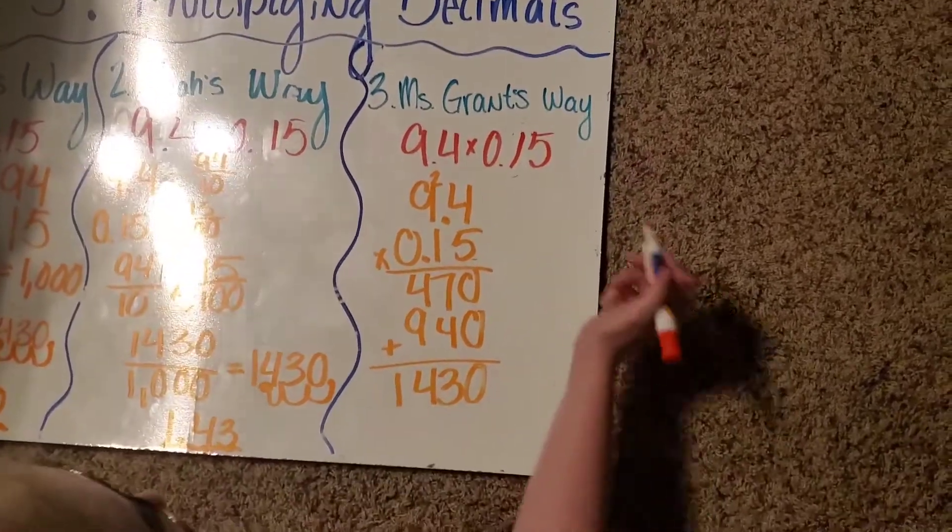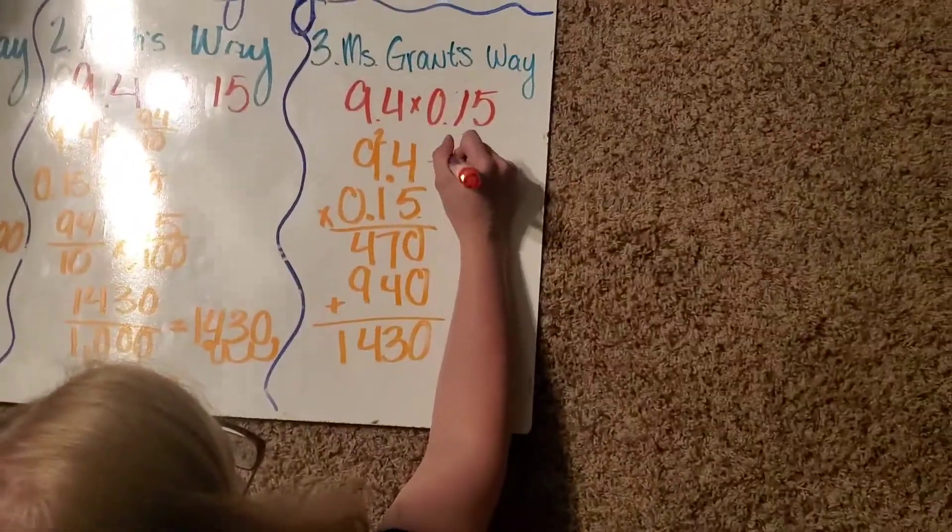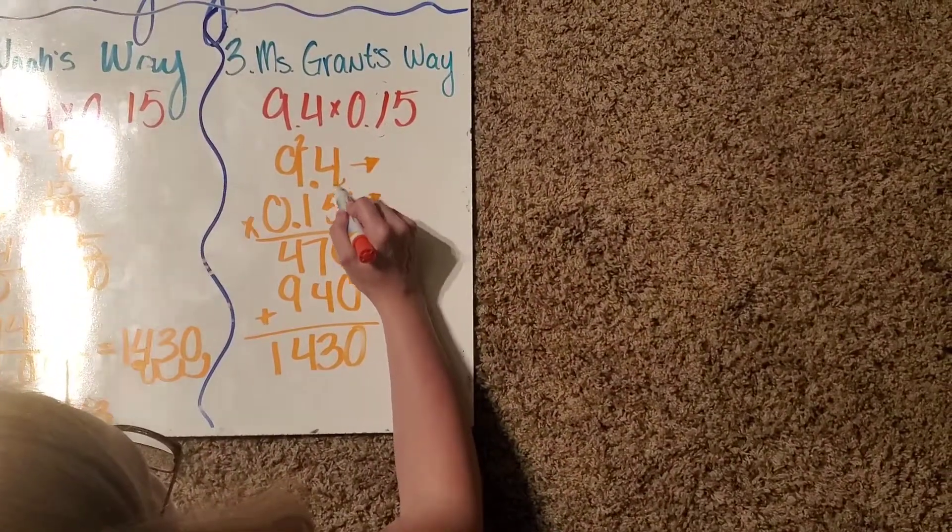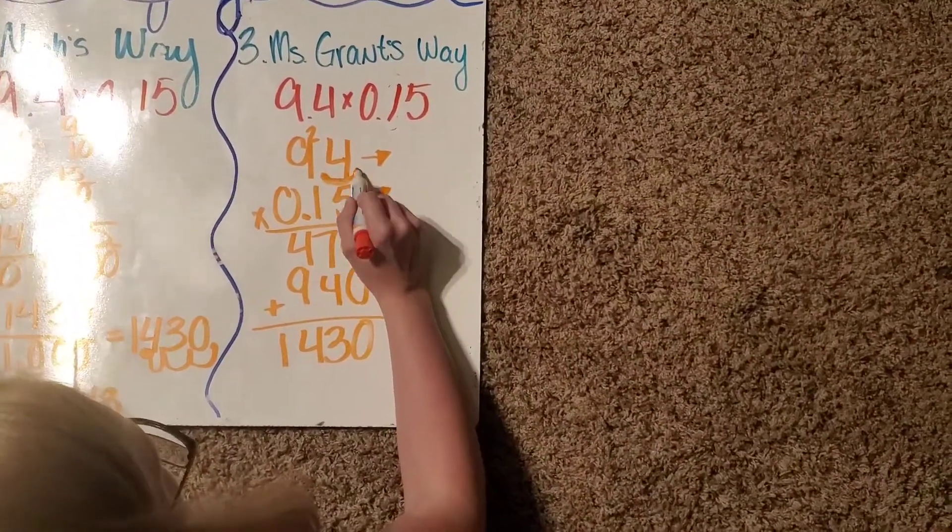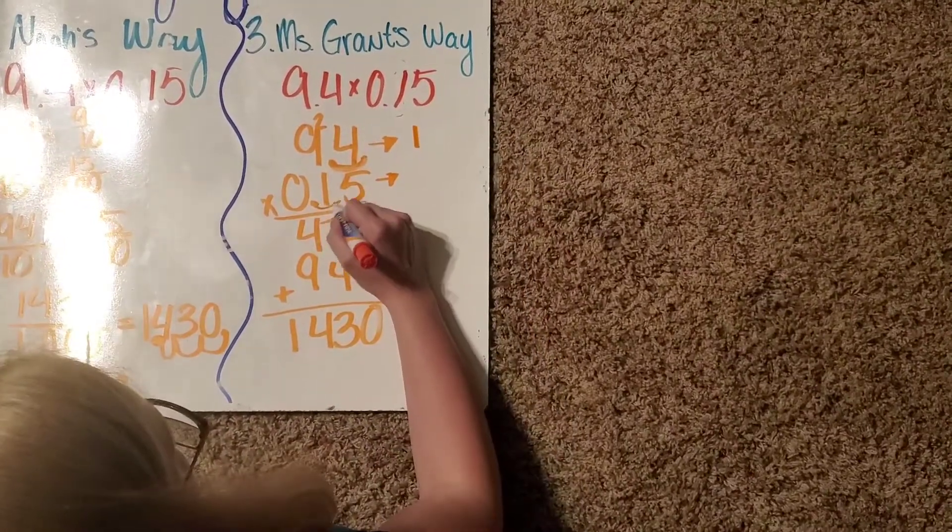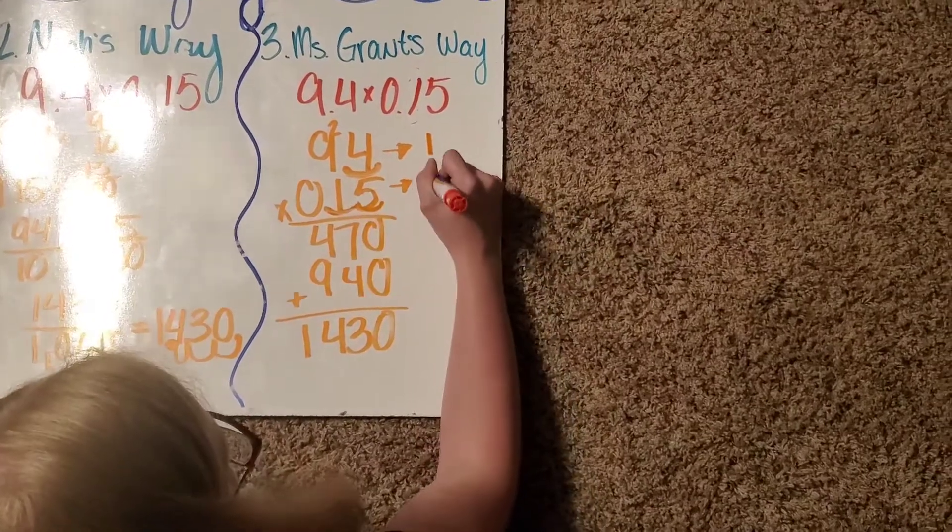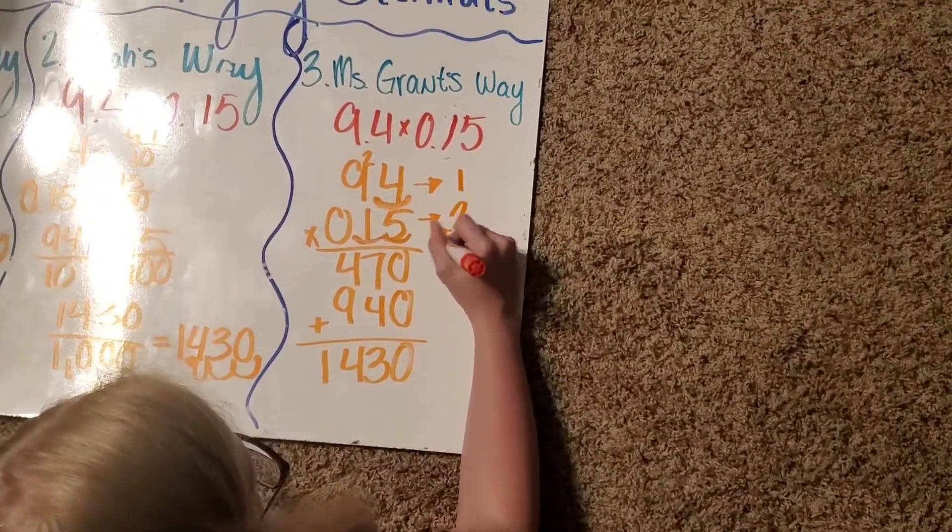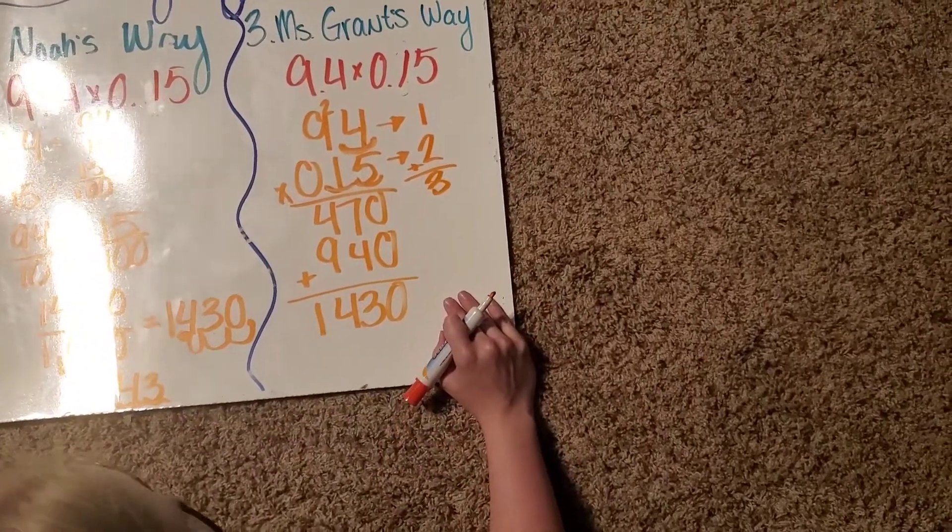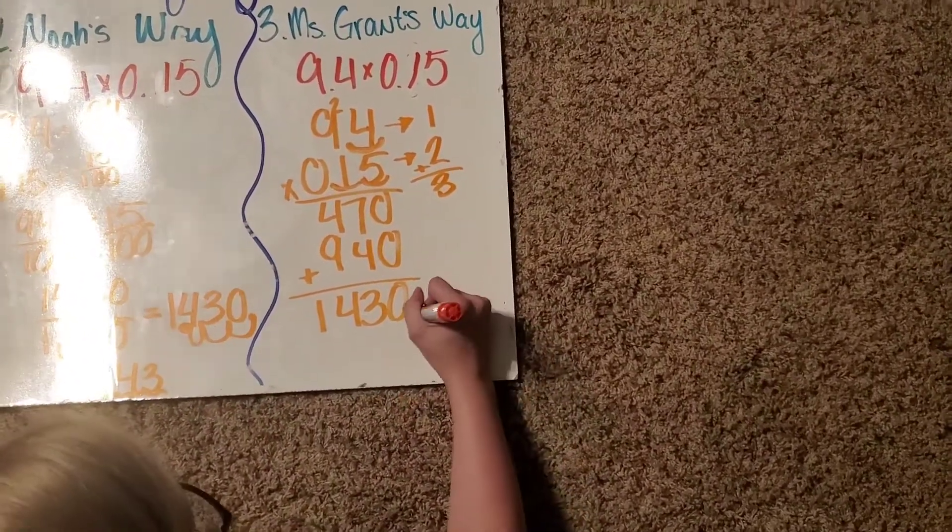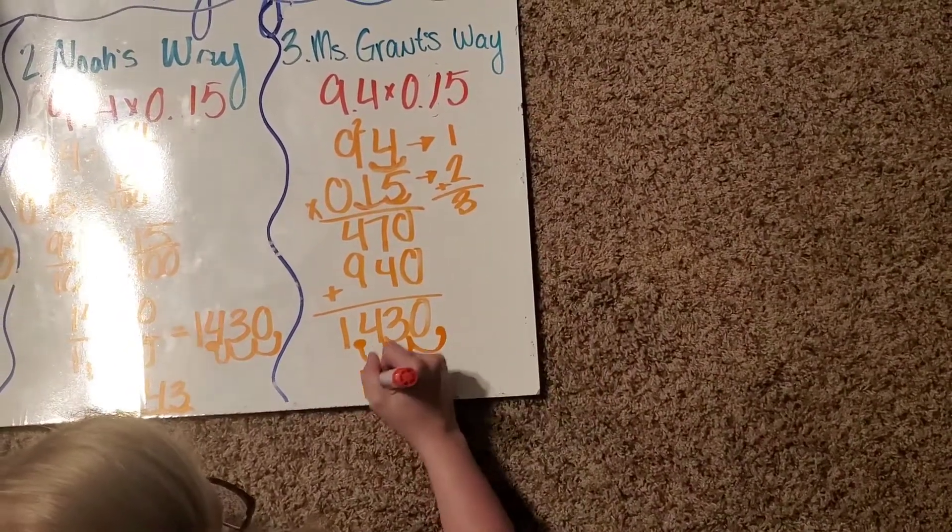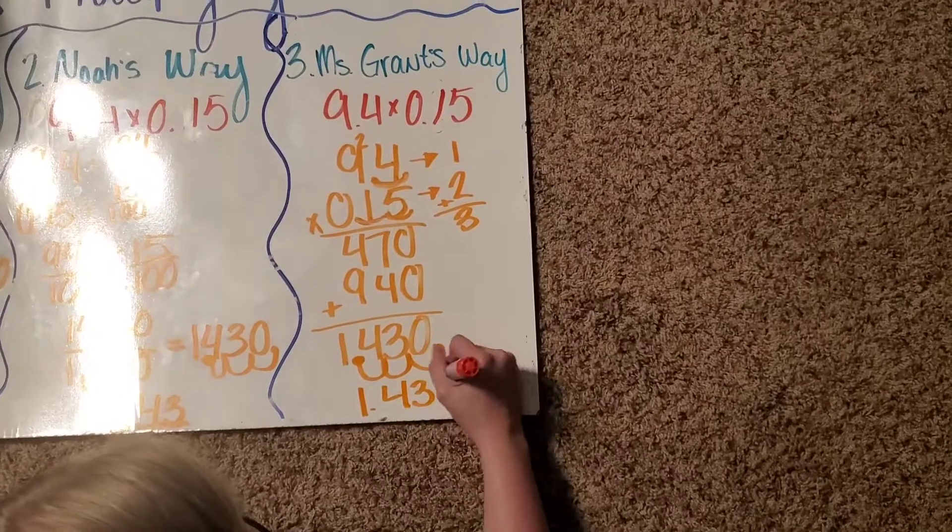But now, I'm going to count the decimals. So, there is one number behind the decimal in 9 and 4 tenths. And then, there is two numbers behind the decimal in 15 hundredths. 1 plus 2 is 3. So, I need three numbers behind my decimal here. And we still get the same number.